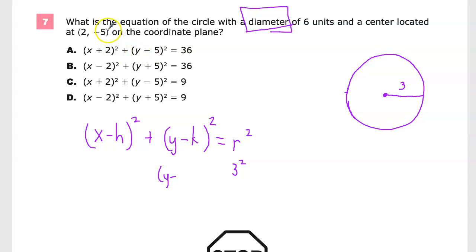The k value, by the way, is the y equivalent of the center. So this is your k and this is your h. And x minus 2.